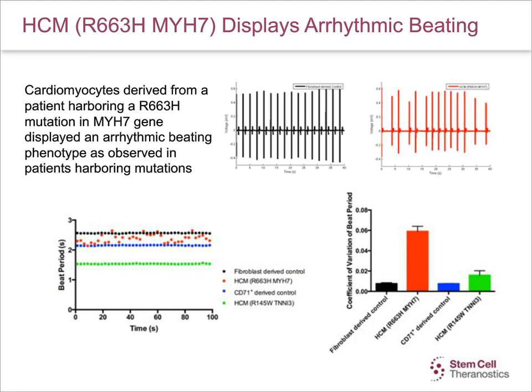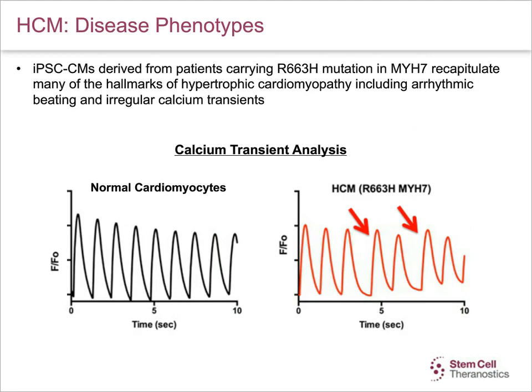This slide shows differences between control and HCM cells measured on a different platform in the form of calcium transients. The plots show fluorescent intensity measured in time and normalized to a baseline, and there are missed beats in the HCM cardiomyocytes as compared to the controls.